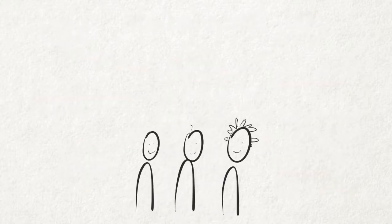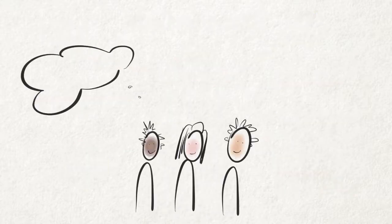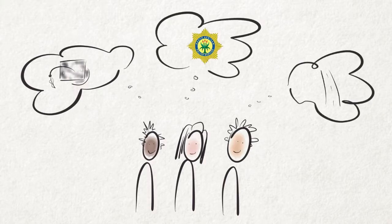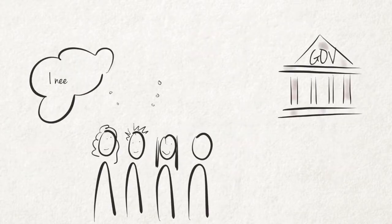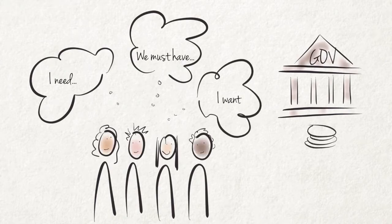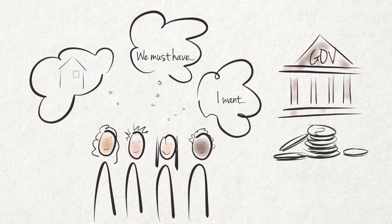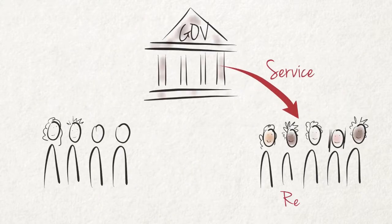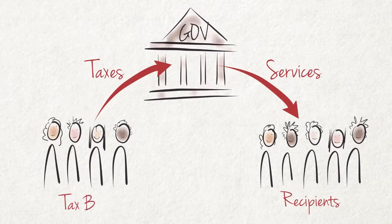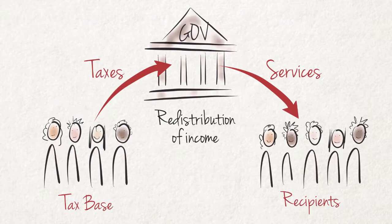We all want government services such as better education, more policing, and better roads. All these things cost money. The government is faced by continuous demands to increase its expenditure as people want more goods and services from the government. These demands include free houses and free basic services such as electricity and water. The provision of these services to the needy, paid for by means of taxes raised from the more fortunate, amounts to a large redistribution of income from the payers to the recipients.